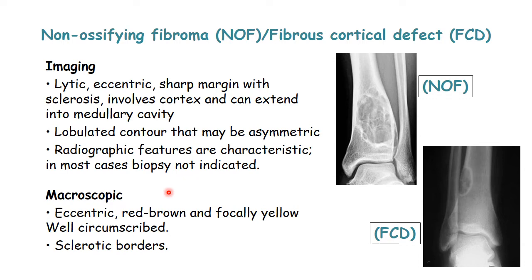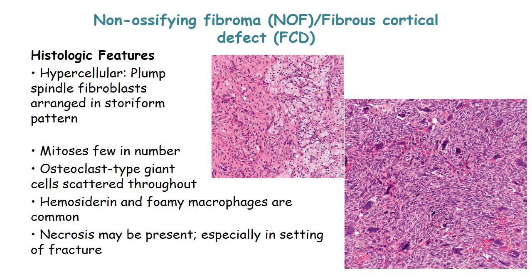Grossly, the lesion is eccentric, red-brown and focally yellow due to accumulation of foamy histiocytes, and is well-circumscribed with sclerotic borders. Histologically, there are three main features: first, cellular proliferation of spindle-shaped cells with a storiform pattern; second, osteoclast-type giant cells evenly distributed within the tumor; and third, foamy histiocytes that may engulf extravasated erythrocytes and contain hemosiderin pigment.